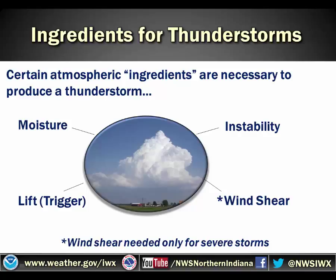You need certain ingredients to produce a thunderstorm. You need moisture, instability, a source of lift or a trigger, and also wind shear to help make the storm severe.